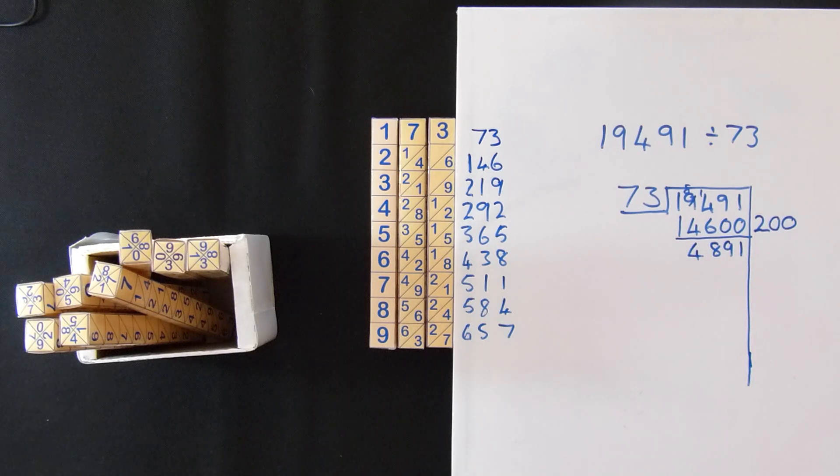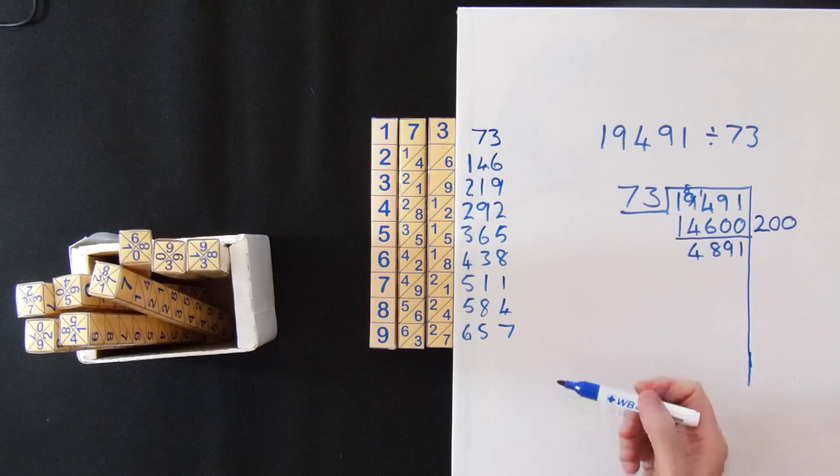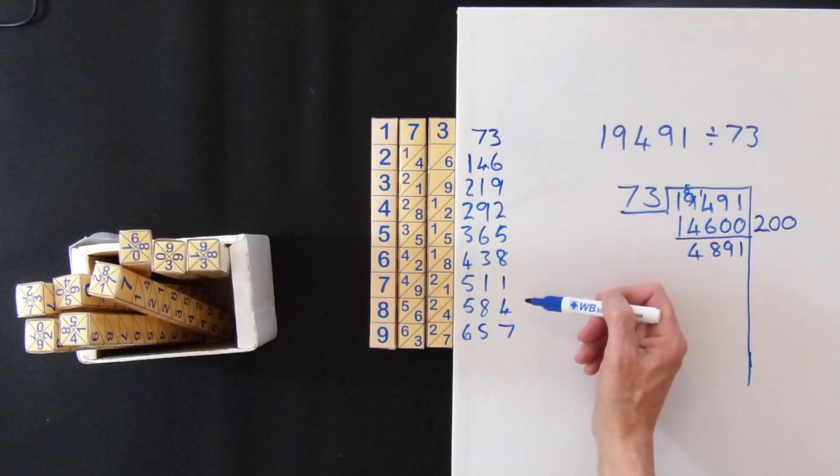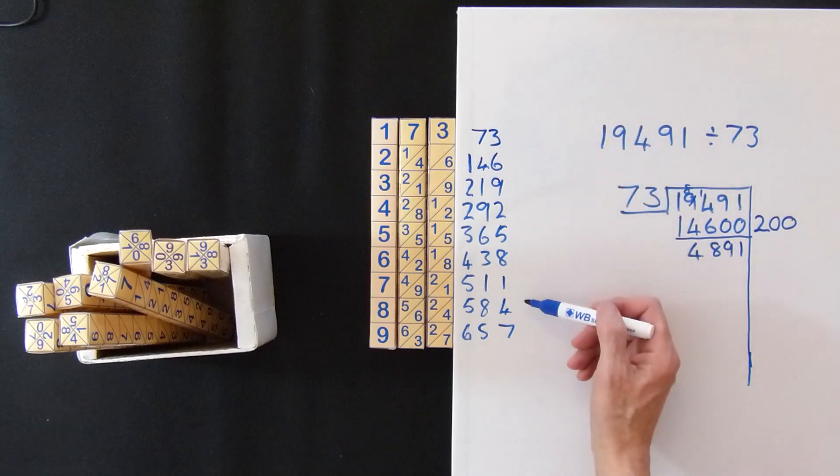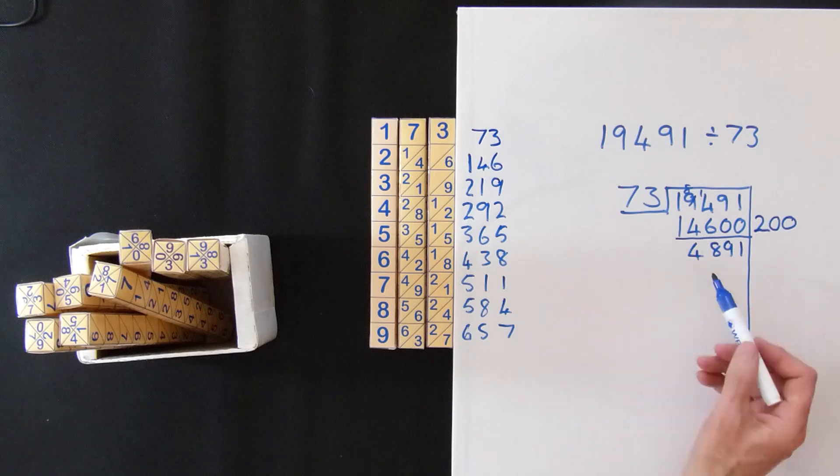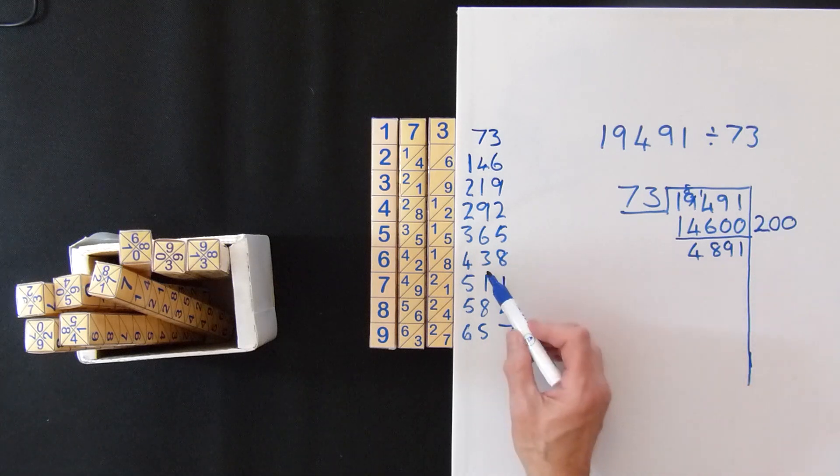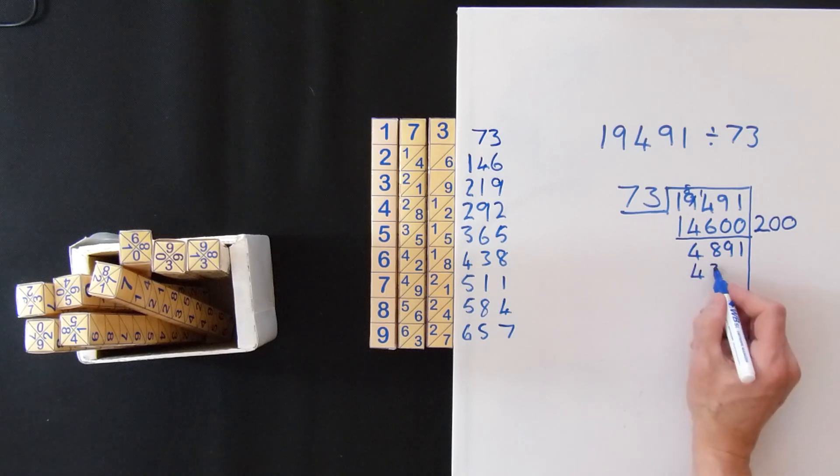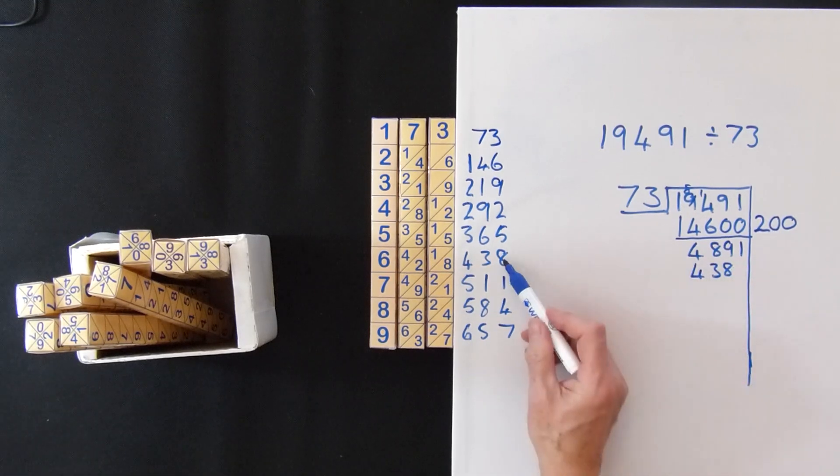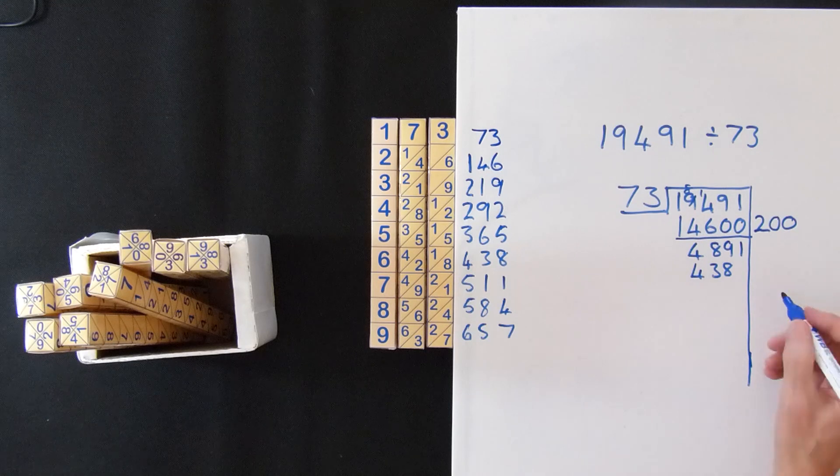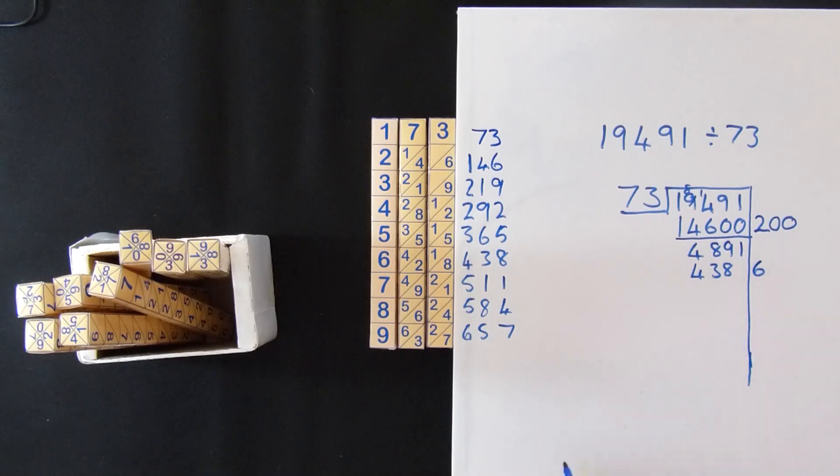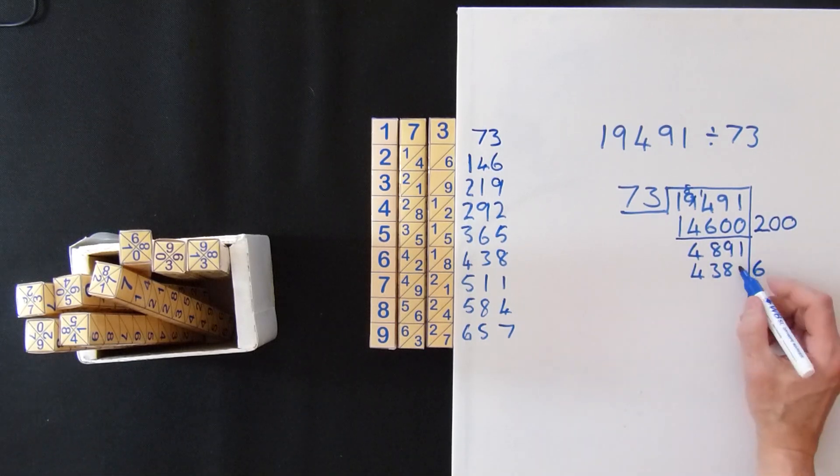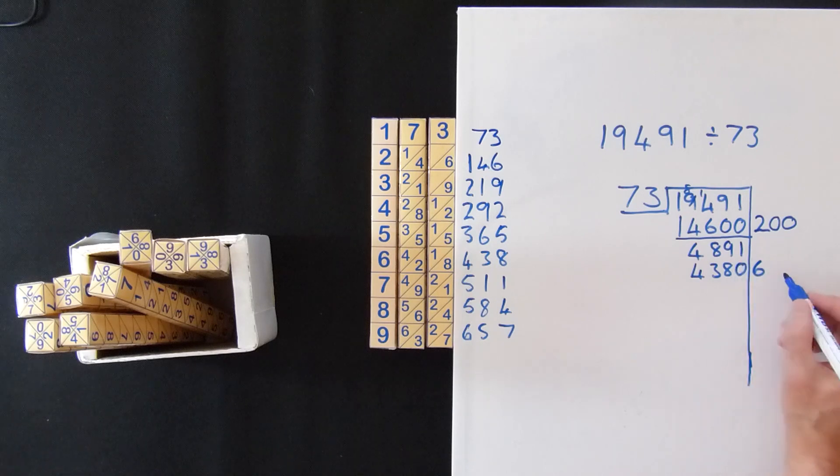And we're left with 4891. We now do the same again and we look down to see what's the lowest one less than 489. And we see you've got 438 there. So we write 438. How many was that? It's 6. So put the 6 in there. But there isn't just 6 because there's another 0 in there. So there was actually 60 of them.